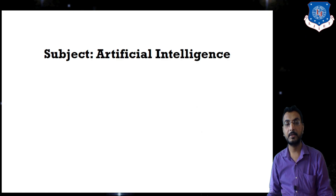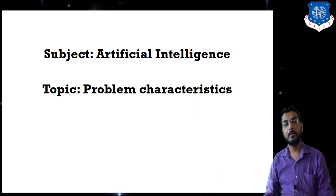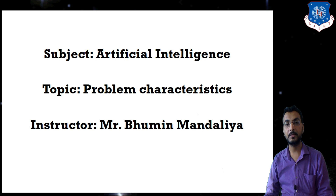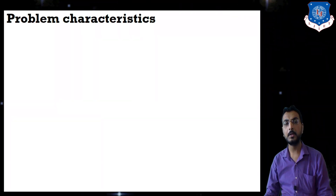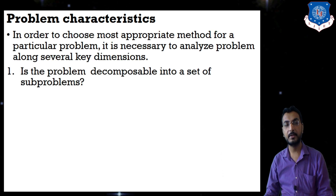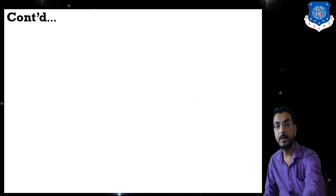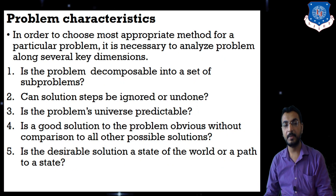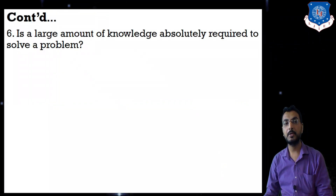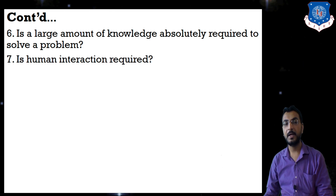Hello students, welcome to the video lecture series of Artificial Intelligence. I am your instructor Bumin Mandalia. Today we are going to cover the remaining three problem characteristics. In the previous session we had studied seven problem characteristics total. The remaining ones are: fifth - is the desirable solution a state of world or a path to a state; sixth - is a large amount of knowledge absolutely required to solve the problem; and seventh - is human interaction required.